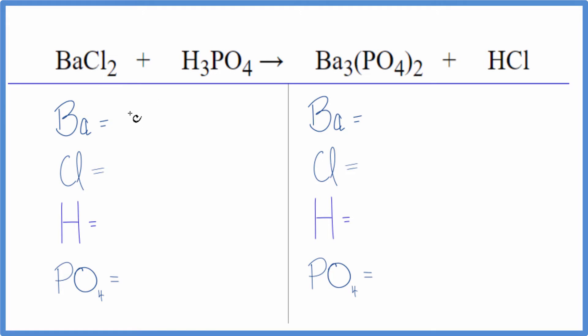Let's count the atoms up. We have one barium, two chlorine atoms, three hydrogen atoms. Here's a trick: when we have polyatomic ions on both sides, we have the phosphate ion here and here, so we're just going to call that one thing, and that makes the balancing a lot easier. We have one phosphate ion.